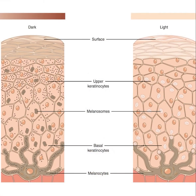Let's start with the responsible party: the melanocyte. It's responsible for your beautiful skin color. Did you know that we all have virtually the same number of melanocytes, no matter your Fitzpatrick rating? Darker skins just produce more and darker melanosomes. Those melanosomes are large and distributed singly, whereas in my Irish-Scottish complexion, they are smaller and packaged in little clusters.